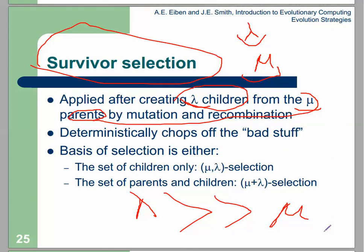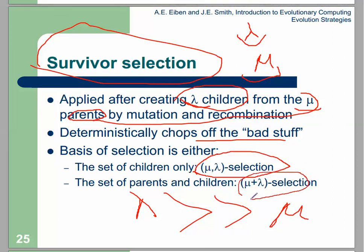In this type we select good individuals and remove bad individuals for the next generation. Survival selection can select from only the children, or from both children and parents. We produce children by crossover and mutation and selection of parents, but here the survival selection is from both children and parents for the next generation.